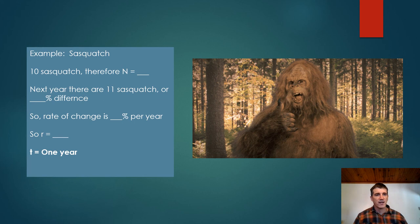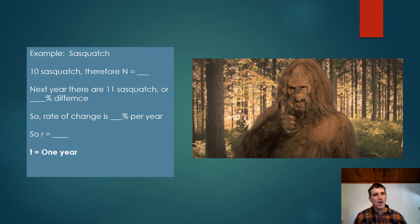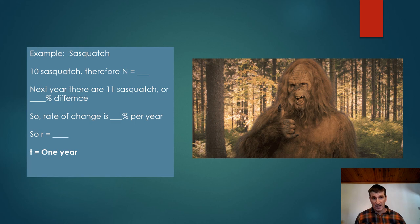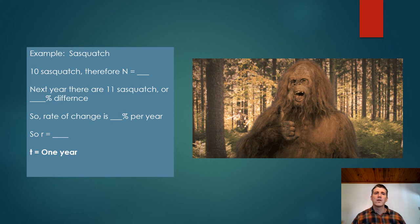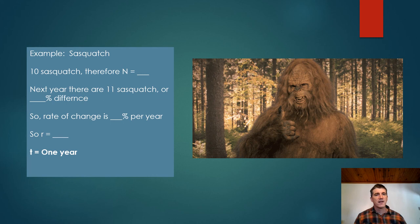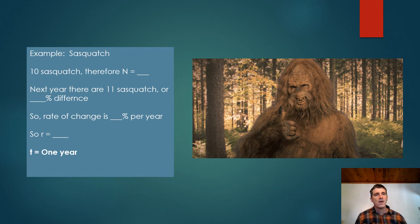These concepts are best understood with an example. Consider a hypothetical population of Sasquatches — obviously a made-up example. If we have 10 Sasquatches, N equals 10. If next year we have 11 Sasquatches, that represents a 10% difference, so the rate of change is 10% per year, giving us R equals 1.1, and T equals one year. Going from 10 to 11 Sasquatches is a growth rate or R of 1.1. If this doesn't make sense, pause for a moment and make sure you understand this concept before moving on.